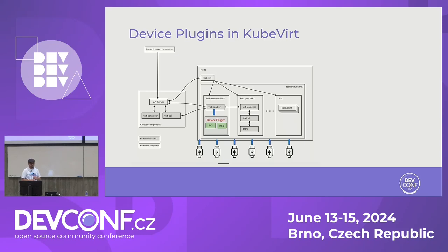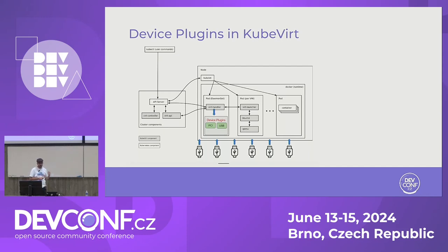How it works with KubeVirt — in the end we want the USB device to show up in the guest. That works via Virt Handler, which is the privileged daemonset component. We can spin the device plugin we've already had for some time — for PCI, and since the beginning for KVM — because you have to have access to DevKVM for virtualization. All of that is under a device plugin component in Virt Handler. It's a separate process that runs in the daemonset pod.